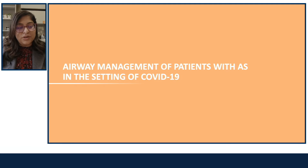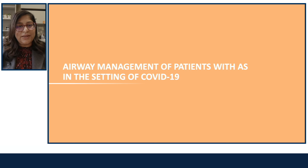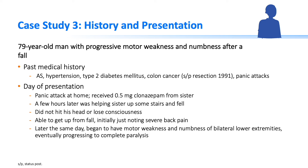We will now address airway management in the setting of COVID-19. Airway management is itself complicated in the presence of COVID-19, and additional problems arise in patients with underlying ankylosing spondylitis. The third case is a 78-year-old man with progressive motor weakness and numbness after a fall. Past medical history was positive for ankylosing spondylitis, hypertension, diabetes, colon cancer status post-resection in 1991, and panic attacks.